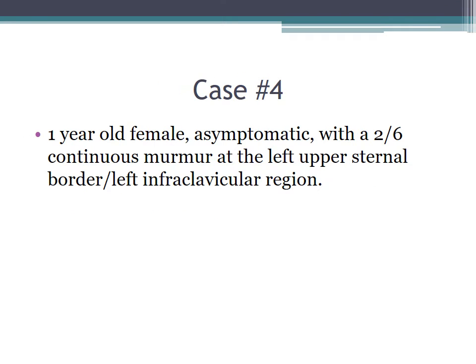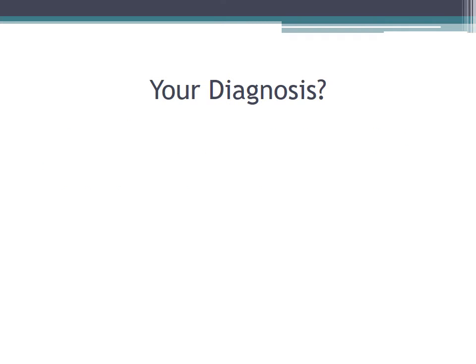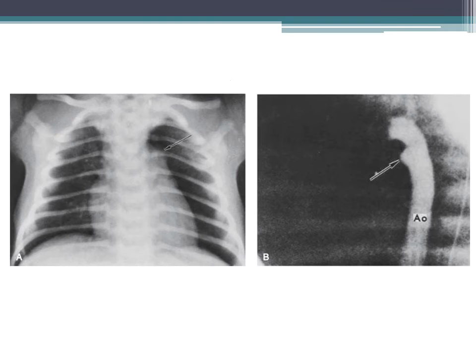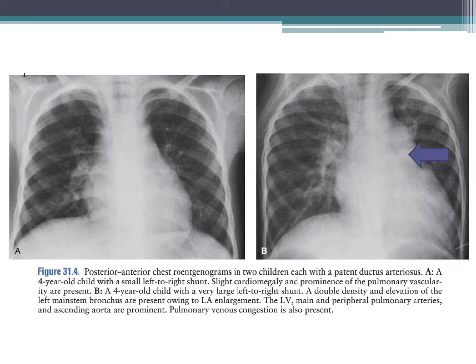Case four continued: a one-year-old female who is asymptomatic with a two out of six continuous murmur at the left upper sternal border and left infraclavicular region — this is a patent ductus arteriosus. On chest x-ray, you can see a ductal bump, cardiomegaly, double density and elevation of the left main stem bronchus from left atrial enlargement, prominent LV, MPA, ascending aorta, and pulmonary vascular congestion.